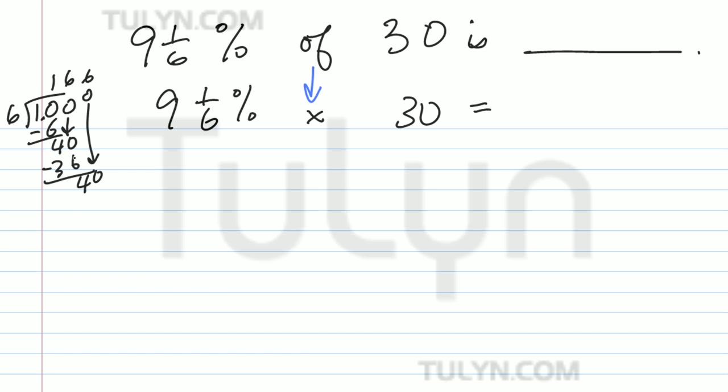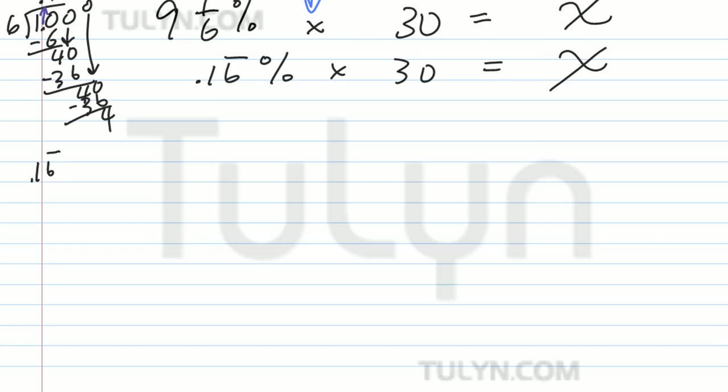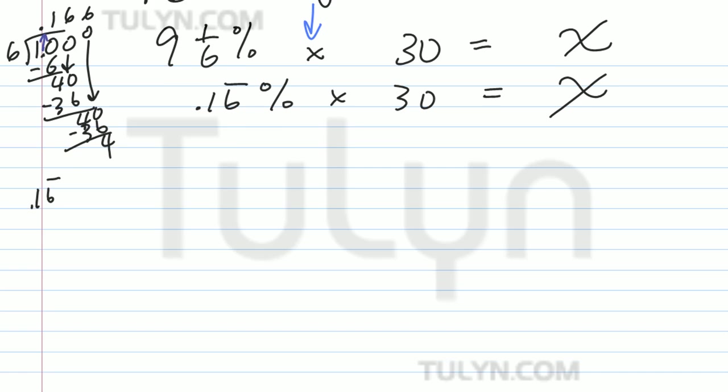Bring down another 0, it's going to be 6 again, 6 times 6 is 36. Bring up the decimal from your dividend to your quotient, it's going to be 0.16 repeating. So 0.16 bar over it percent times 30 is going to be equal some value we don't know, so we'll just let it equal x.